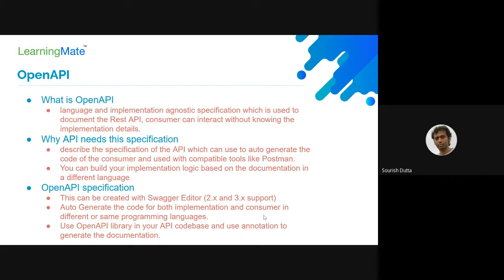Any API you create needs to be consumed by other tools — be it a different language consumer, a tool like Postman, or other clients. The OpenAPI specification also helps you auto-generate calling code, so instead of writing REST client code using RestTemplate or WebClient in Spring, or HttpClient libraries, you can auto-generate that code in different languages. You can also build your server-side implementation logic based on this documentation.